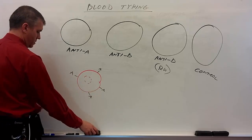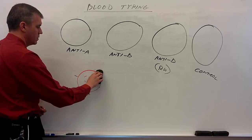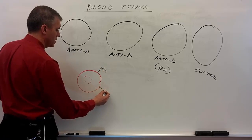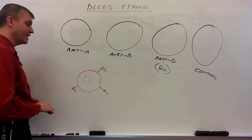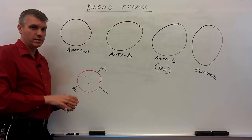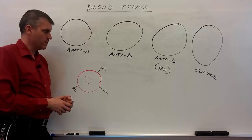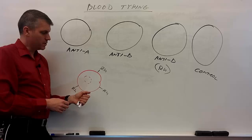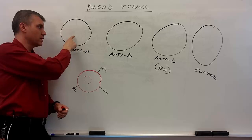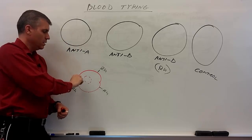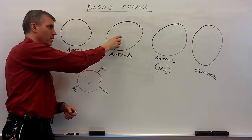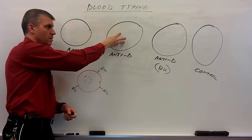Let's do another blood type. Let's say the person has only RH antigens on their red blood cells. Feel free to pause and figure it out yourself. When we apply these red blood cells to the anti-A circle, there's no A to react with, so we should see no agglutination. When we apply them to the anti-B circle, there are no B antigens on this person's cells, so we shouldn't see agglutination there either.